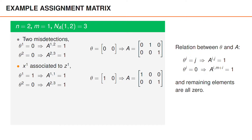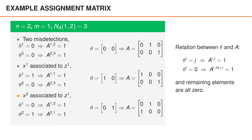A second data association is that object 1 is associated to the detection. We then have that row 1, column 1 is equal to 1, and row 2, column 3 is equal to 1, and all remaining elements are 0. The third and last valid association is that object 2 is associated to the detection. In this case, row 1, column 2 is 1, and row 2, column 1 is 1, and all remaining elements are 0.